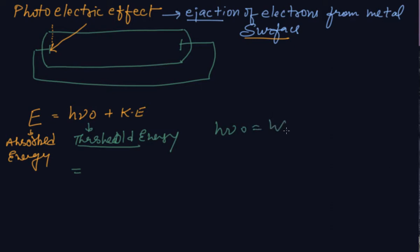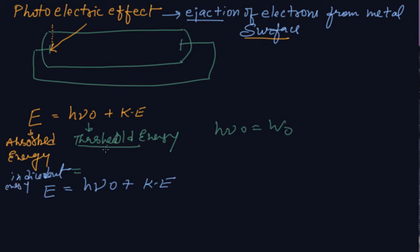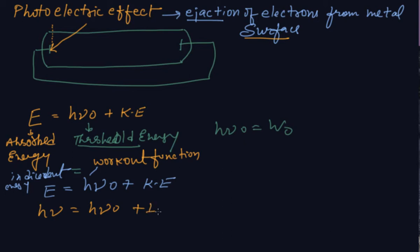Kinetic energy is the energy due to motion. The incident energy can be written as E = hν₀ + kinetic energy. This threshold energy can also be called threshold frequency or work function. From the formula, this becomes: hν = hν₀ + ½mv².